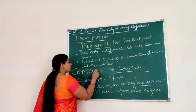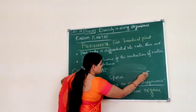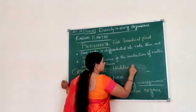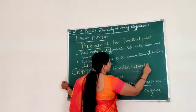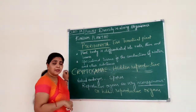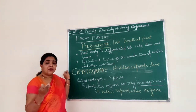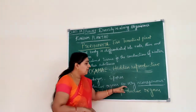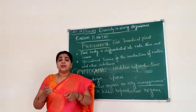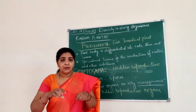Cryptogamy means plants which have a hidden reproductive organ — we really cannot make out their reproductive organ. When we talk about the reproductive organ of a plant, we know that flowers are the reproductive organ. In the case of thallophyta, bryophyta, and pteridophyta, the reproductive organs are inconspicuous and hidden, which is why they are included under the group called cryptogamy.